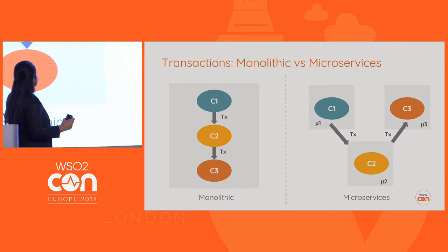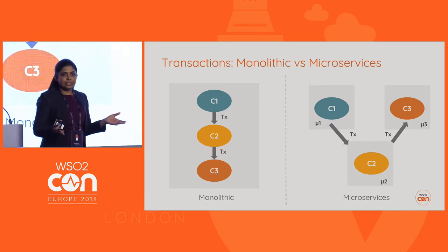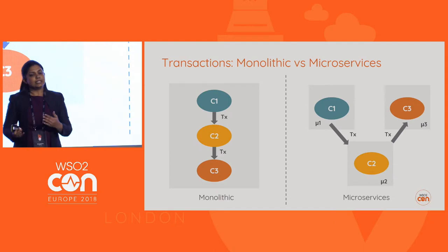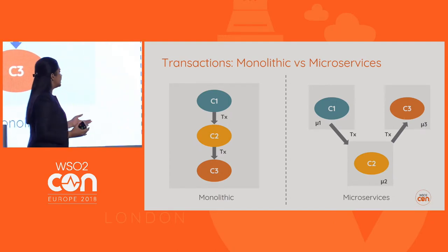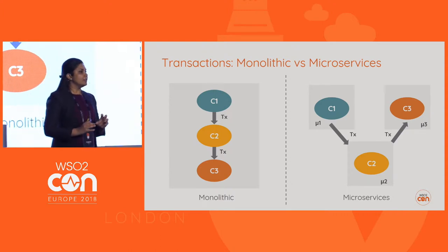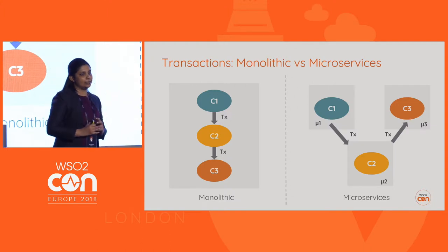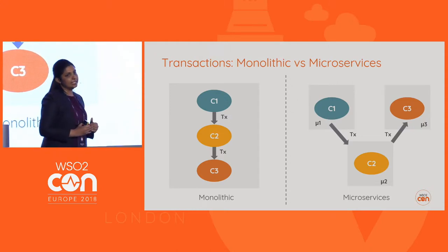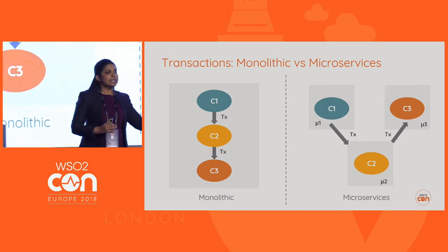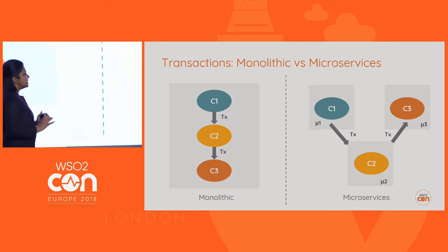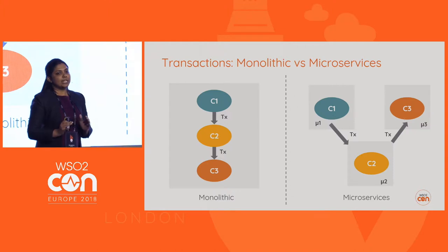Consider a vacation planning application with three components: a flight booking component talking to a MySQL database and a hotel booking service talking to an Oracle database. If all these modules participate in the same business transaction, we need to propagate the same transaction context across all three components. Since they all run in the same process in a monolith, propagating context is relatively easy. But in microservices, the same components run as different services, and we need to propagate the transaction context across the network. That is the problem we are trying to solve.